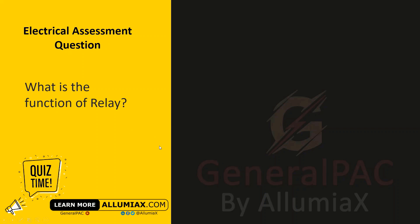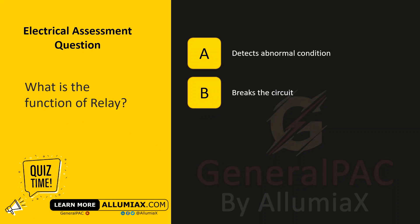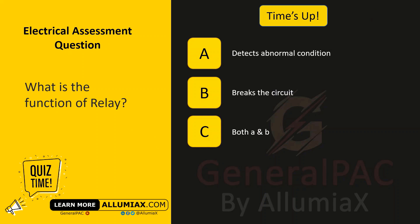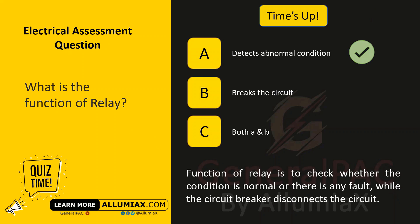What is the function of relay? A: detects abnormal condition, B: breaks the circuit, C: both A and B. The answer is A — detects abnormal condition. The function of a relay is to check whether the condition is normal.